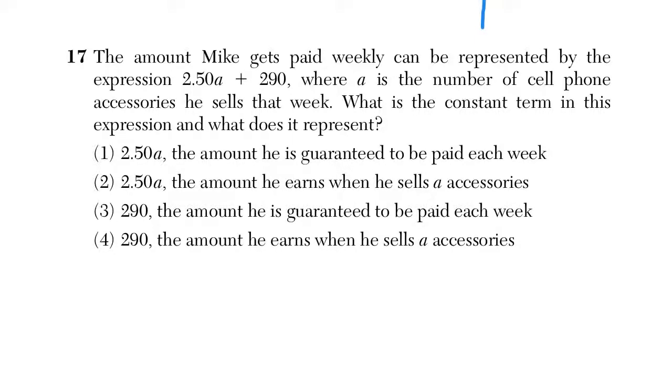And last one on this page, question 17. It was interested in the constant term. So the constant term here was plus 290. Obviously 2.50a is our variable. So it's going to be 3 or 4, and the answer ends up being choice 3.